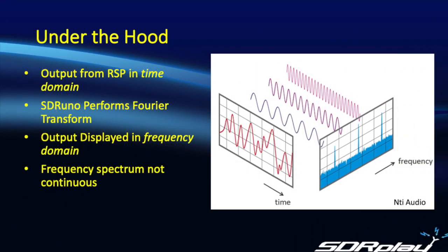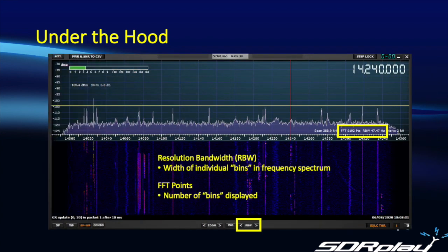First up, a quick review of what's going on in your SDR. The output from your RSP is the output from an analogue to digital converter that samples the radio spectrum and outputs those as samples in the time domain, so what you have is a continuously varying voltage over time. Once in SDR Uno, a mathematical operation is performed called a Fourier transform, and what that does is it converts from the time domain to the frequency domain, allowing you to display in the main spectrum window different power levels according to the frequency. So what you see in the main spectrum window of SDR Uno is representative of the power level at different frequencies.